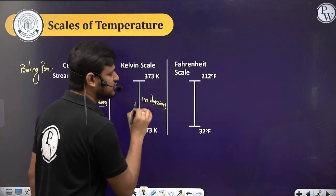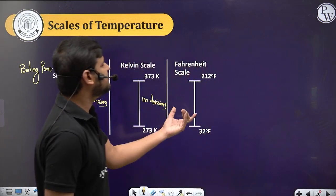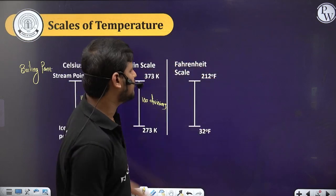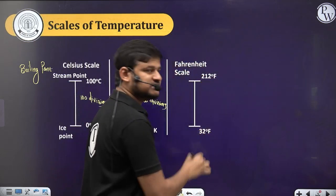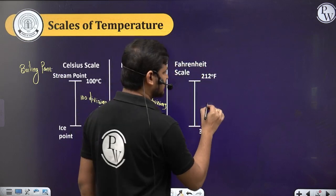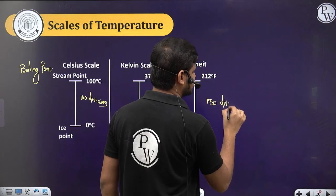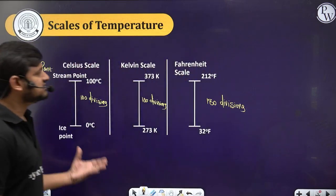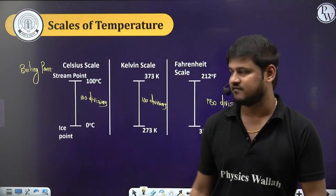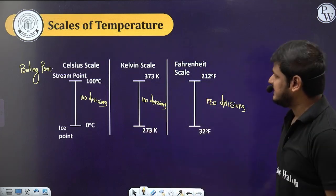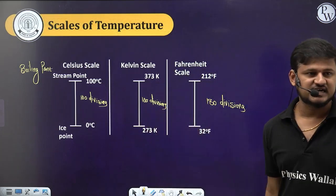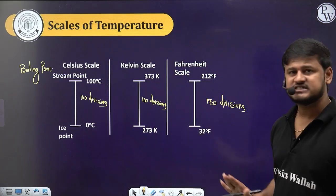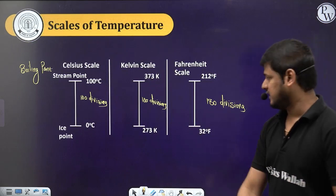For the Fahrenheit scale, the steam point is 212°F and the ice point is 32°F. The Celsius scale has 100 divisions (0 to 100), the Kelvin scale also has 100 divisions (273 to 373), whereas the Fahrenheit scale has 180 divisions (212 minus 32). These are the three different scales. Just remember the ice point and the boiling point for each scale.